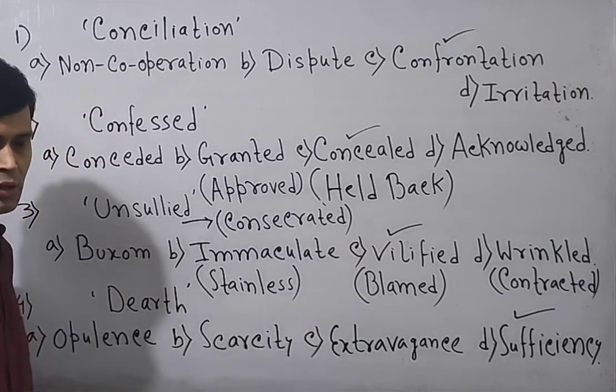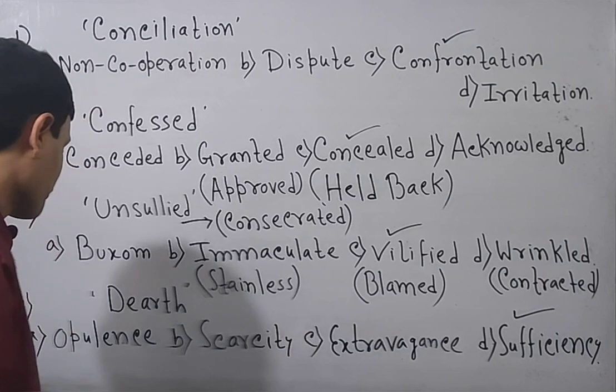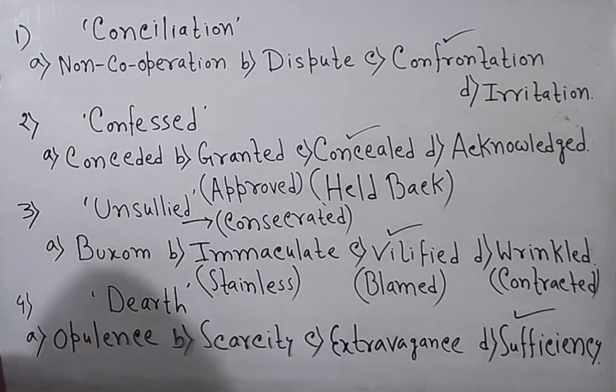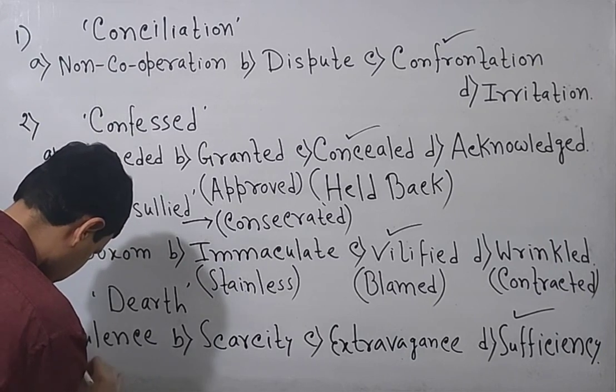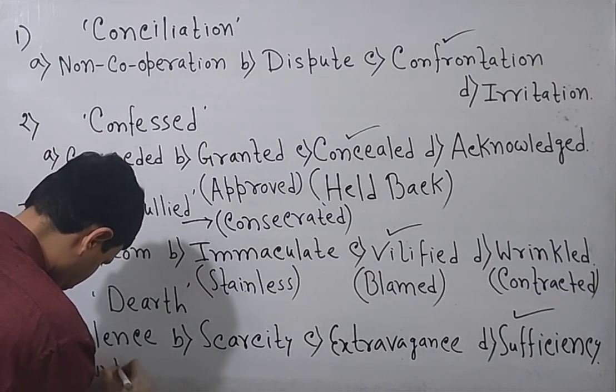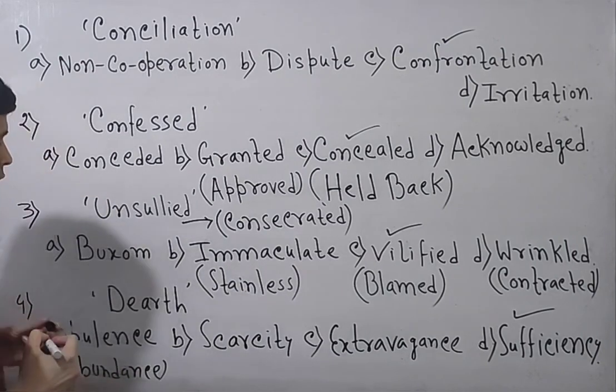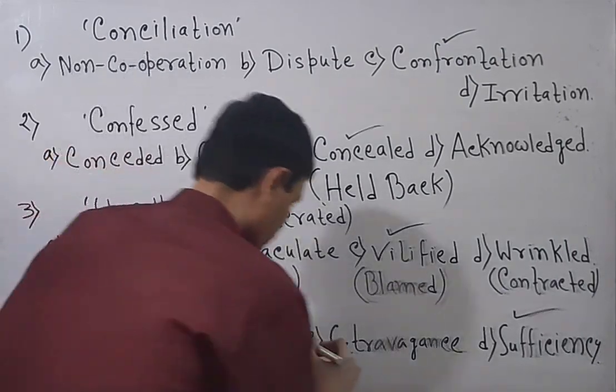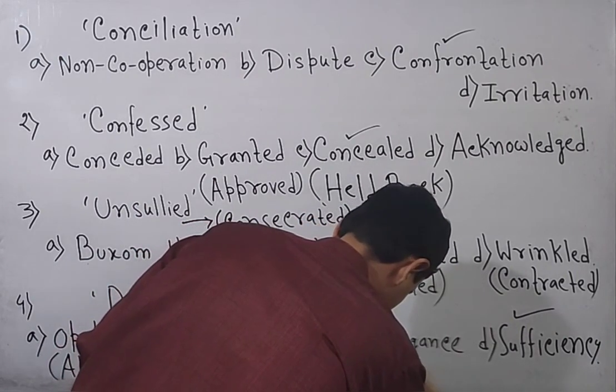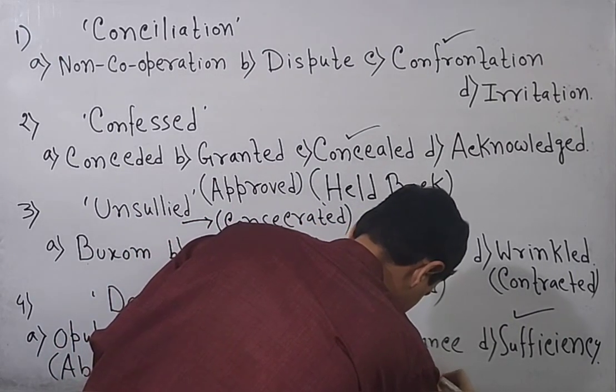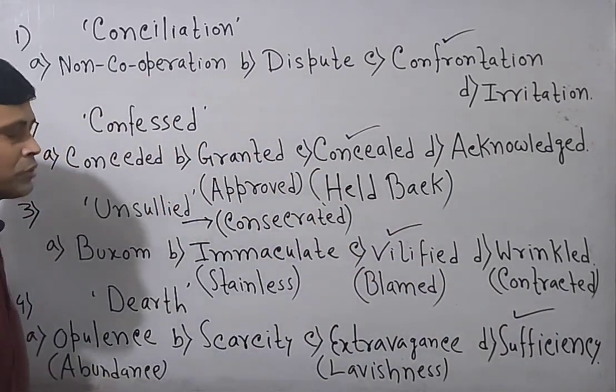Dearth means crisis or scarcity or privation. Opulence means something huge in quantity. Even you can say abundance. Extravagance means lavishness. It is also an abstract noun. So here the answer is sufficiency.